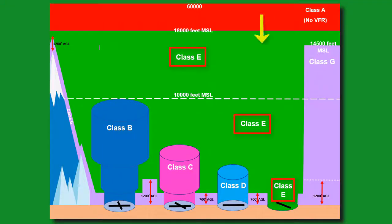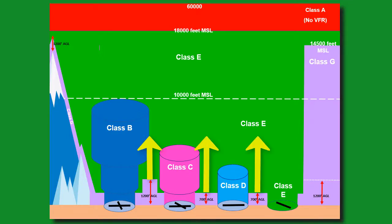Class E airspace is directly below Class A airspace. Most of the time, the airspace starts at 1,200 feet AGL, although there are times it starts 700 feet AGL, or can even start at the surface.